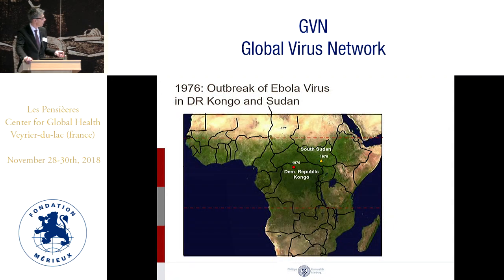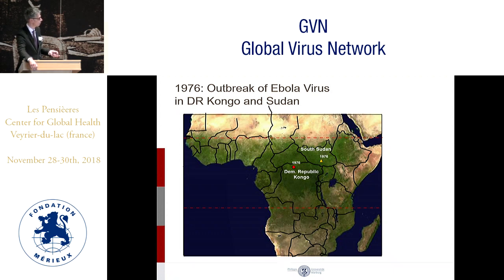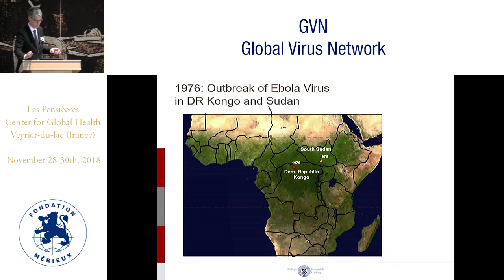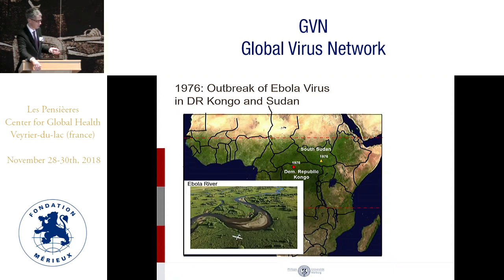After nine years of silence, in 1976 there were two outbreaks of hemorrhagic fever — one in southern Sudan and one in the Democratic Republic of Congo, then Zaire. While it was first thought to be the same virus, it turned out these were two different viruses. They looked similar to Marburg virus, but because they were antigenically very different, it was clear this was a separate virus, called after a river in the Democratic Republic of Congo — Ebola virus.